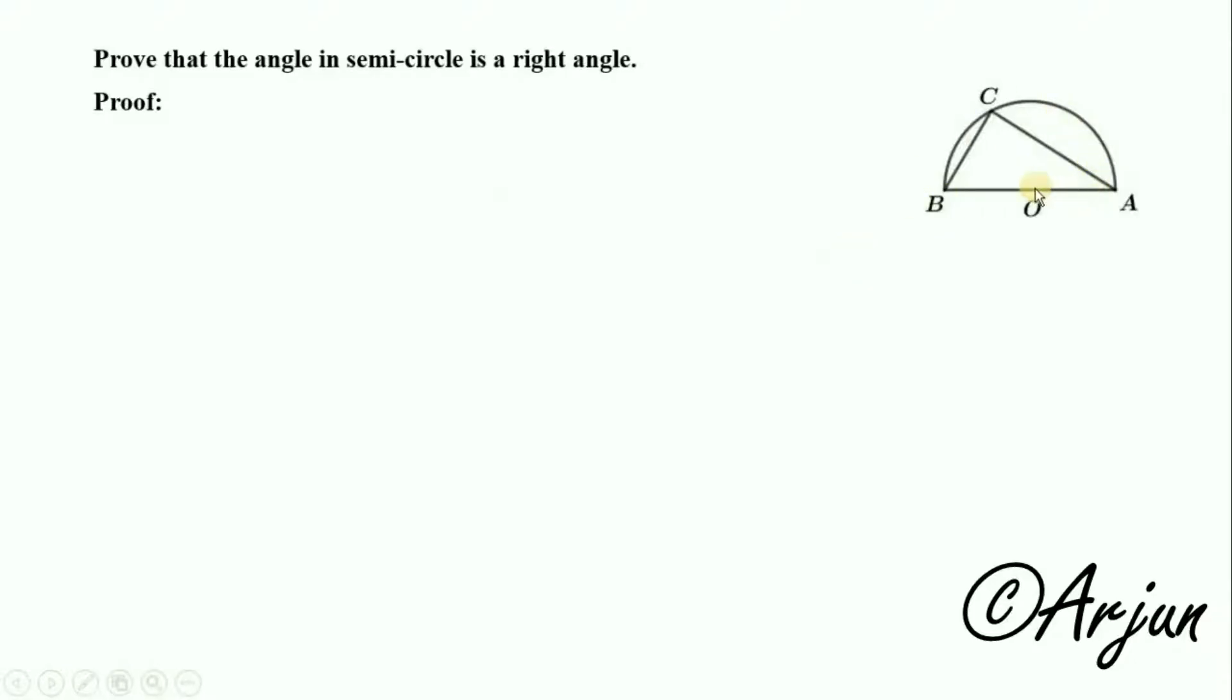Let angle ABC be the angle in semicircle - this angle BCA or ACB is the angle at the semicircle.